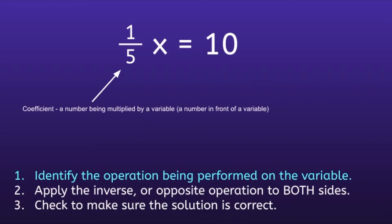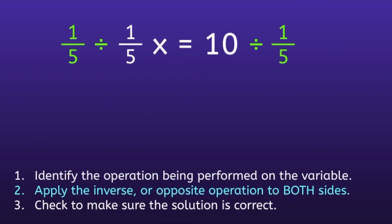Since we are multiplying one-fifth by x, we want to do the inverse or opposite operation to both sides. So what's the opposite of multiplying by one-fifth? Dividing by one-fifth — and we're going to do that to both sides. Now I'm going to show you a quick clip of how to divide fractions in case you need a refresher.